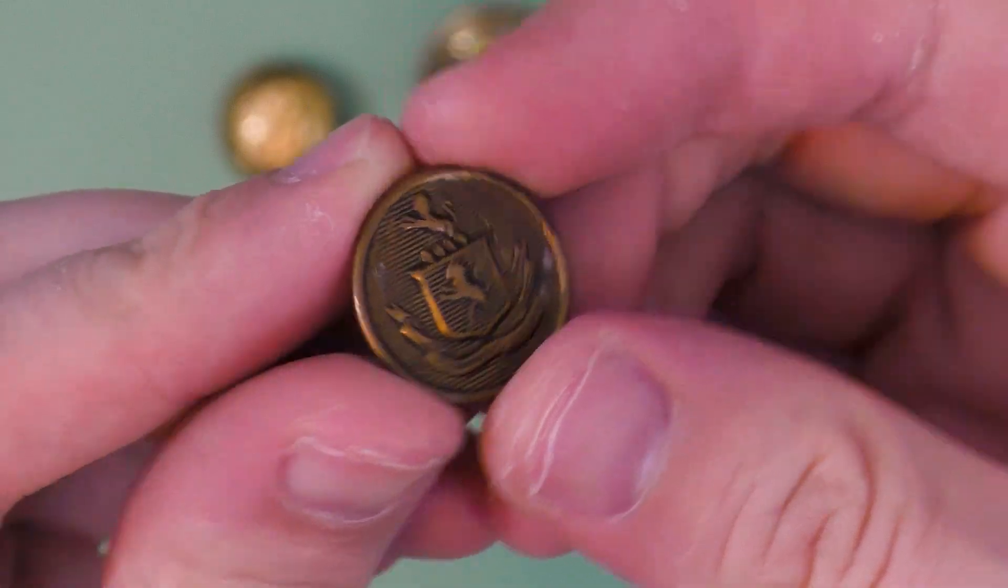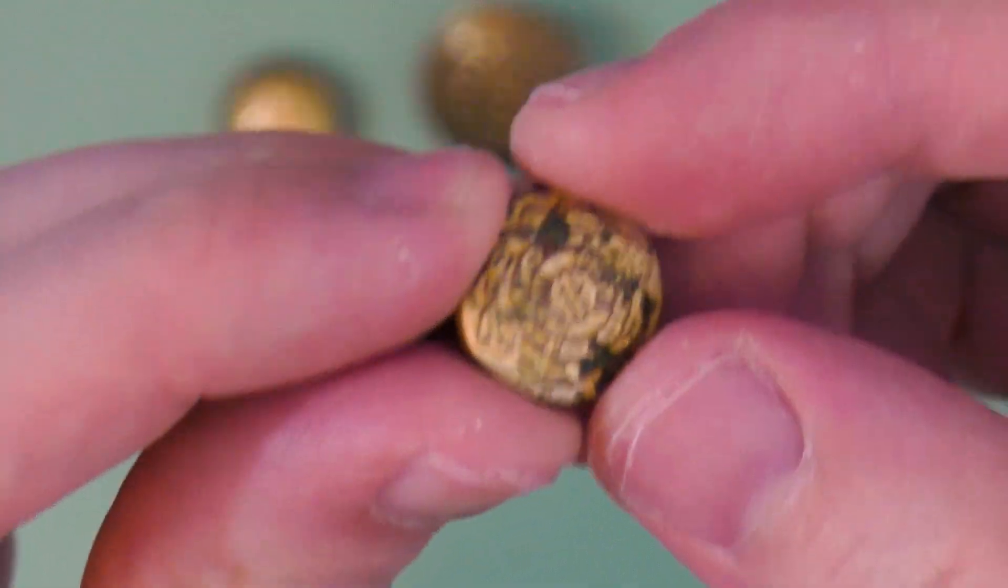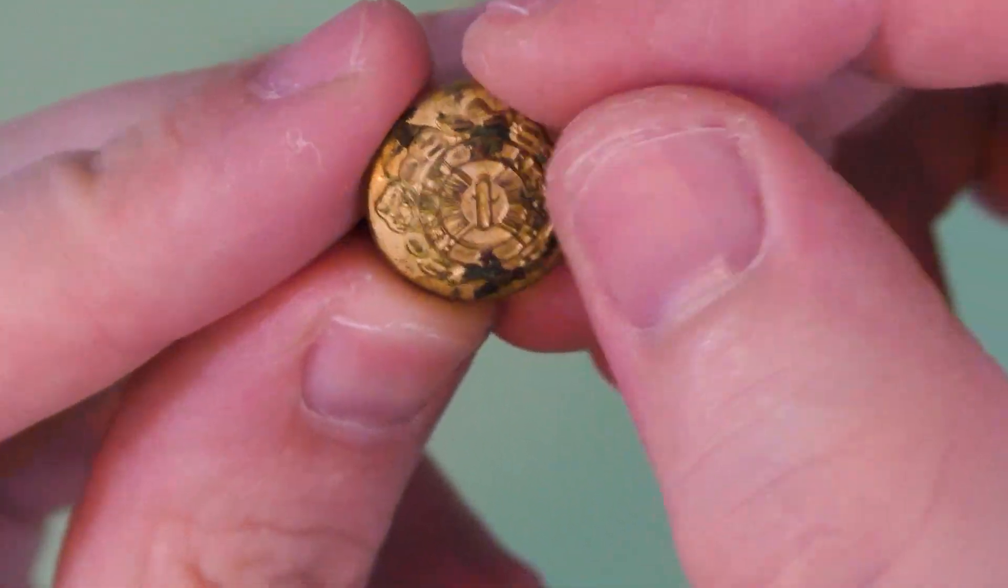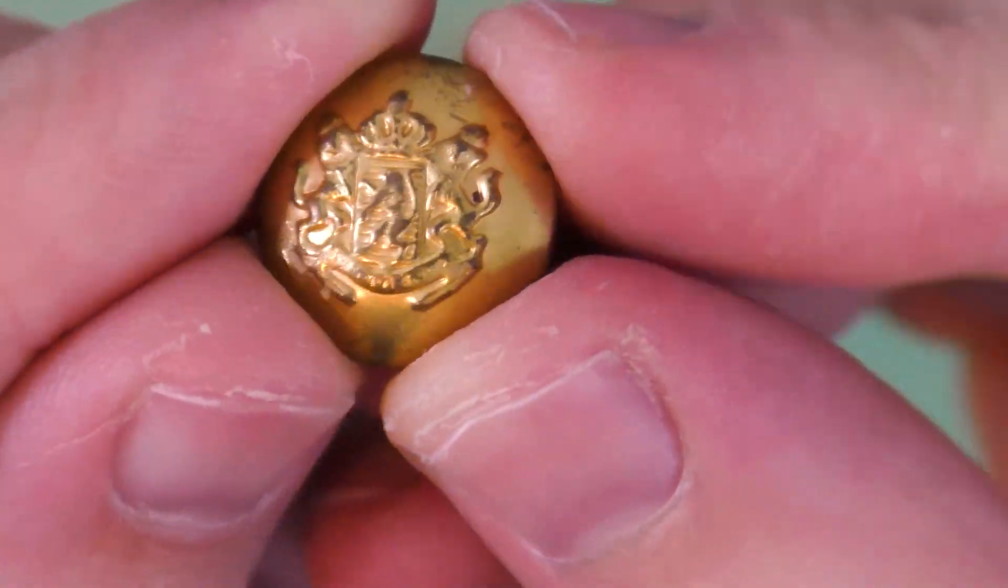Now for the really fun part. You can take anything that has a raised design and use that as the template to press into your coins. So here I have a bunch of old buttons that have great raised coat of arms designs that I can use.